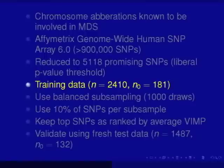I'll talk about the trade-off between P and N that's needed to be able to do accurate variable selection. So the first thing I did when I got this data was to reduce the dimensionality to about 5,000 SNPs using univariate P-values with a fairly liberal P-value thresholding value. This gave me a training data set of about 2,400 patients, of which 181 were MDS patients. This may look like a small number, but this is a fairly rare disease — in the U.S., the incidence rate is probably about 10,000 to 20,000 per year.